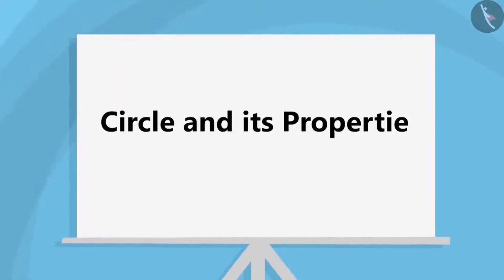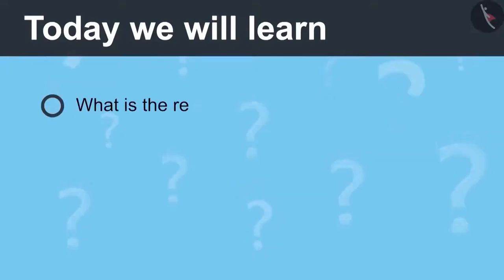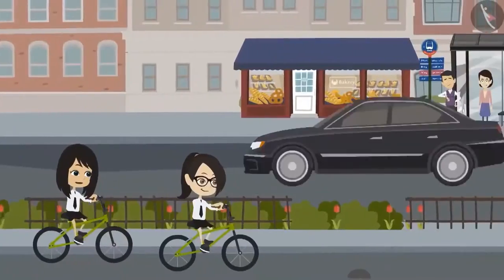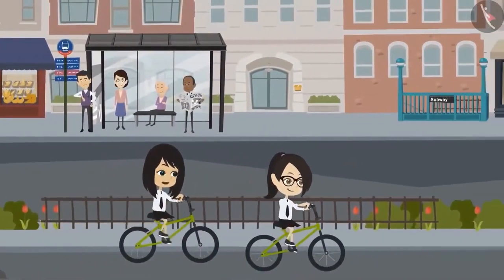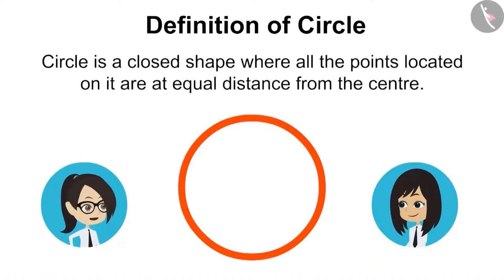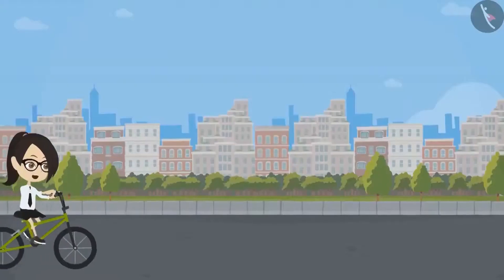Circle and its properties, Part 2. Today we will learn what is the relation between the radius and circle. Remember what Sir told us about circle yesterday? Yes, I remember it well. A circle is a closed shape where all the points located on it are at an equal distance from the centre.